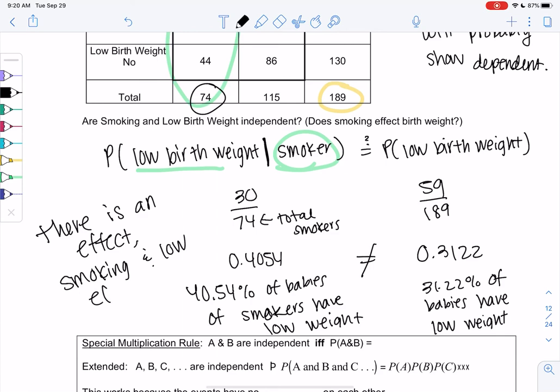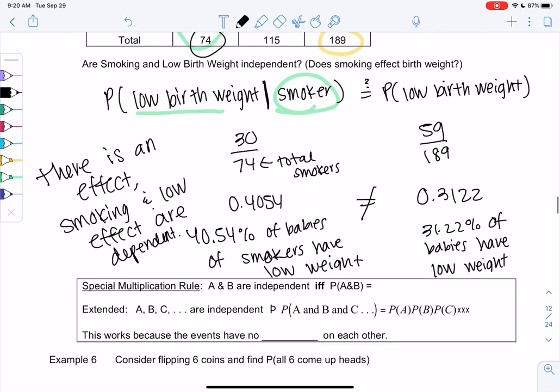There's some sort of relationship. So independent would mean it's 40% either way, or 30% either way, right? The fact that they're smoking does not change the birth weight. Alright, I'll see you back. Well, there's one more example we'll do in the next video.